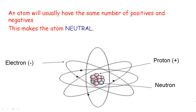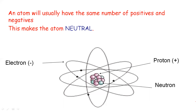Electrons have a negative charge. Charge exists due to the transfer of electrons from one body to another. The transfer of electrons is the reason for the existence of charge.